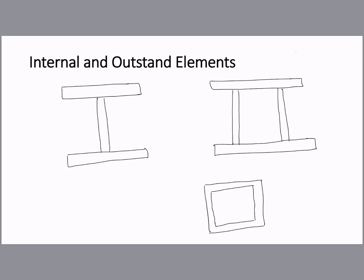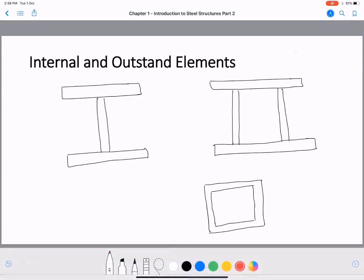An internal element is one supported along two edges — also called a stiffened element. For example, this web element is supported by the top flange and the bottom flange on both sides, so it is called an internal element.